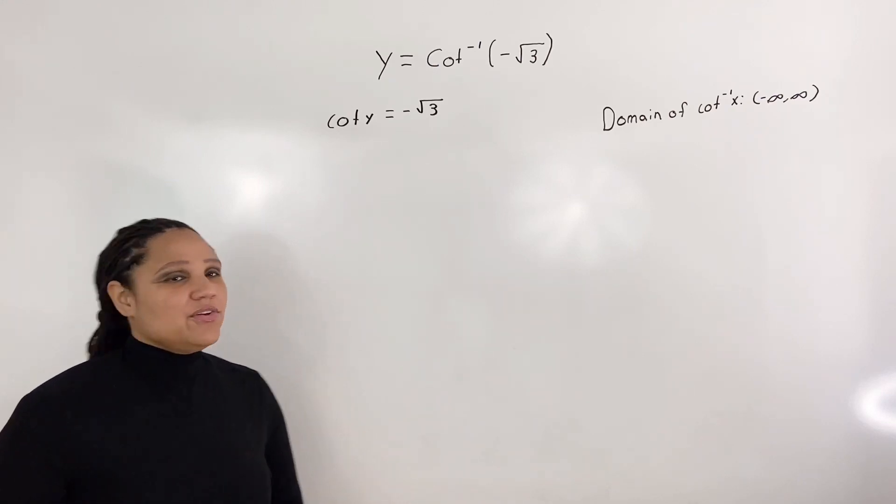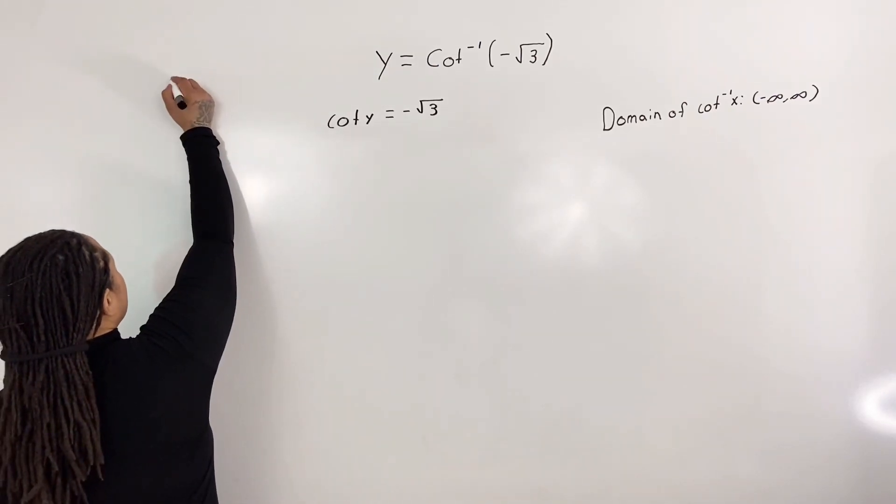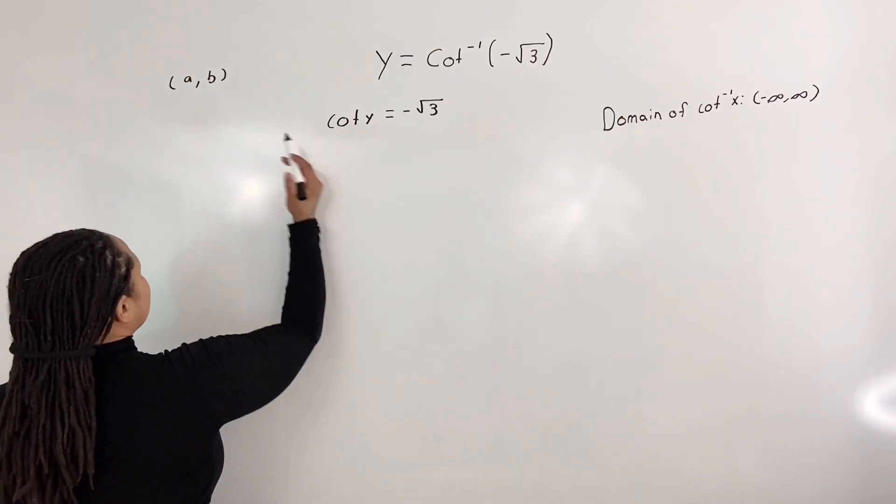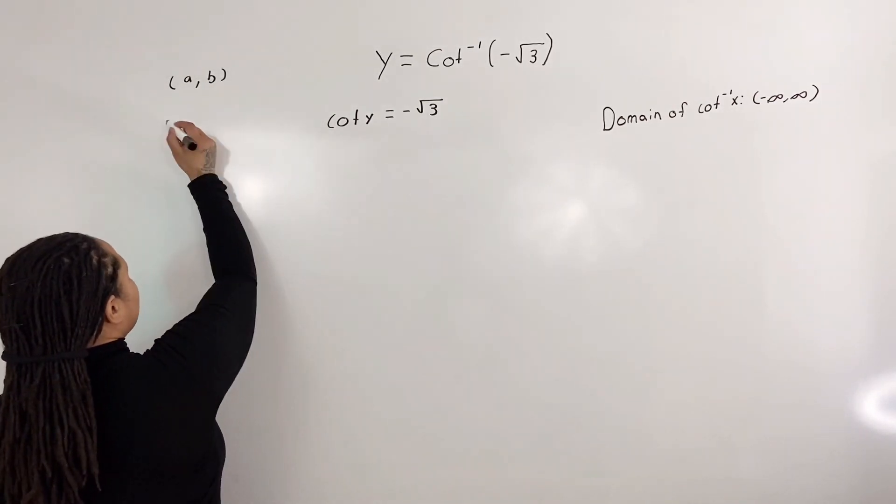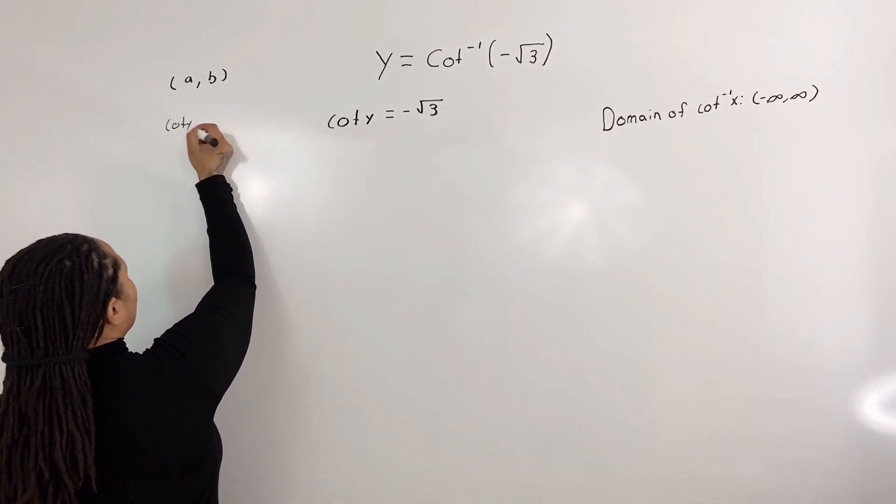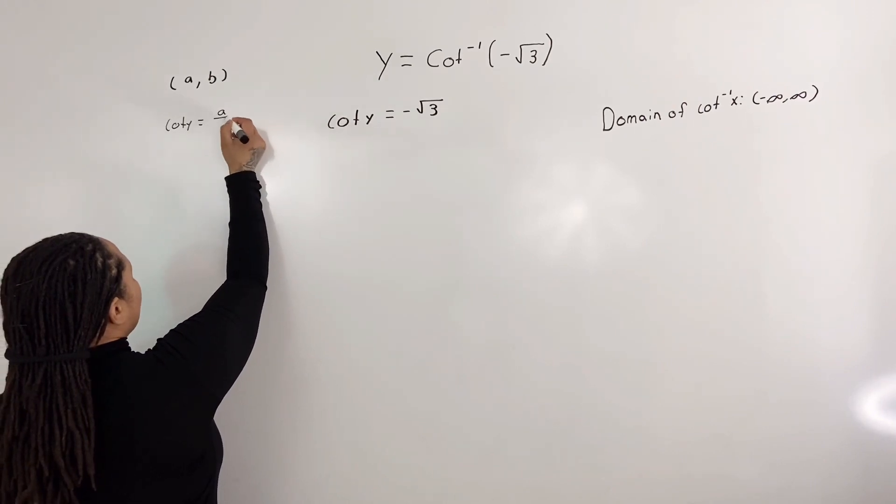Well, on the unit circle, we have coordinates a, b, and cotangent y will take the form a over b.